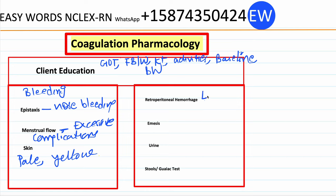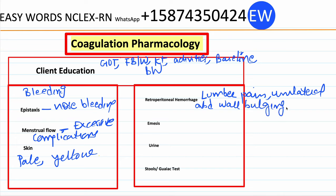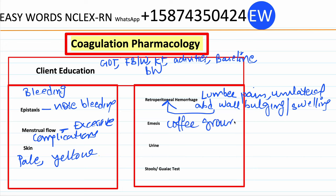Retroperitoneal hemorrhage — if the patient experiences lumbar pain, unilateral abdominal wall bulging, or swelling, it may indicate retroperitoneal hemorrhage. Hematemesis — coffee ground emesis may indicate an upper GI bleed. Urine — tea-colored urine indicates the presence of blood in the urine.